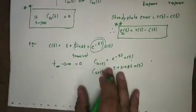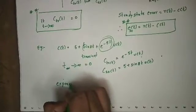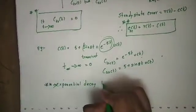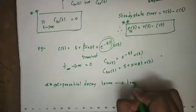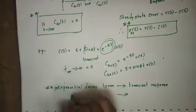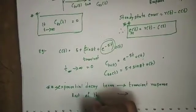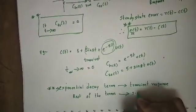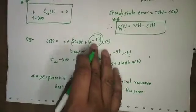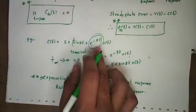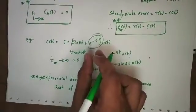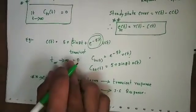This is the steady state response. Important point: exponential decay terms are the transient terms — always. Transient response consists of exponential decay terms. The remaining terms are the steady state response. Exponential decay terms are not rising — they go to 0. So, t tends to infinity equals 0 — those are transient terms. Only exponential decay terms satisfy this.